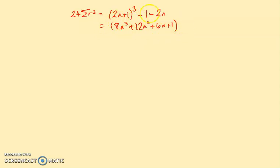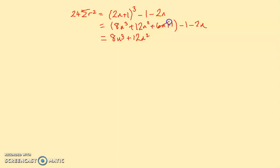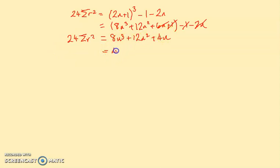Expanding 2n+1 cubed — you could use the binomial theorem — gives 8n³ + 12n² + 6n + 1, so we have that minus 1 minus 2n. Tidying this up: 8n³ + 12n², then 6n and 2n make 4n when subtracted, and the 1 minus 1 is 0. So that equals 24 sigma r squared.